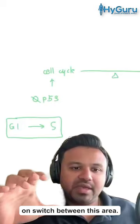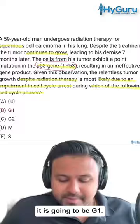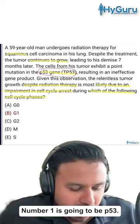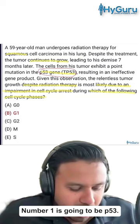When it comes to the best answer to this question, it is going to be G1. What's high yield for us to know is that there are two major mediators that are going to allow for cell cycle progression. Number one is P53 — remember that P53 mutations cause you to have more cell cycle. Number two is retinoblastoma and its effect on elongation factor two.